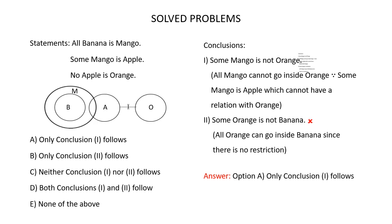In this problem, you are given 3 statements and 2 conclusions. Let's find out which of these conclusions follow from the logic given in the statements. First you have to draw a Venn diagram for the given statements. The statements are: All banana is mango, some mango is apple, no apple is orange.